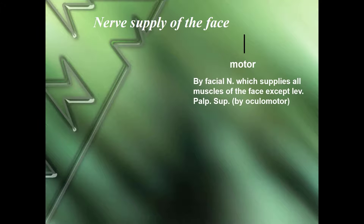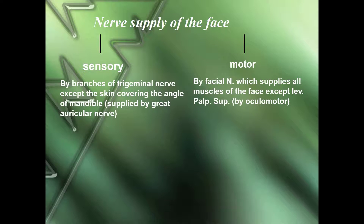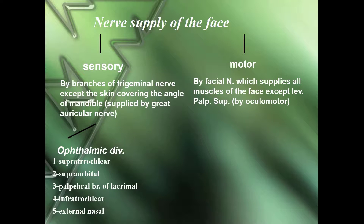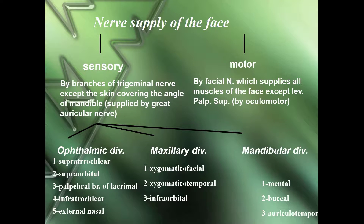Summary of nerve supply: motor supply is by the facial nerve, which supplies all muscles of the face except levator palpebrae superioris, which is supplied by the oculomotor nerve. Sensory supply is by branches of the trigeminal nerve, except the skin covering the angle of the mandible, which is supplied by the greater auricular nerve from the cervical plexus. The ophthalmic division includes supratrochlear, supra-orbital, palpebral branch of lacrimal, infratrochlear, and external nasal. Maxillary division includes zygomaticofacial, zygomaticotemporal, and infraorbital. Mandibular division includes mental, buccal, and auriculotemporal branches.